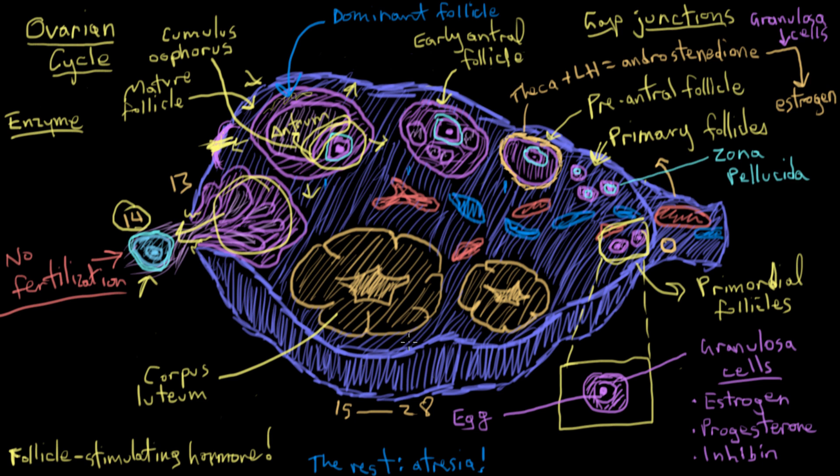Anyway, if the egg doesn't get fertilized, then the corpus luteum reaches a maximum size in about 10 days. So that's about day 25, which it's probably sitting at in this diagram. And then it degenerates by apoptosis. That's a process that cells use to sort of self-destruct and die off. And here I'm abbreviating corpus luteum as CL, just so you know what I mean.